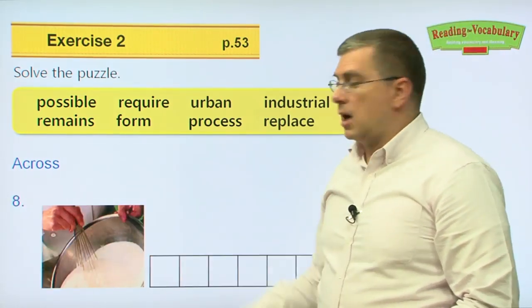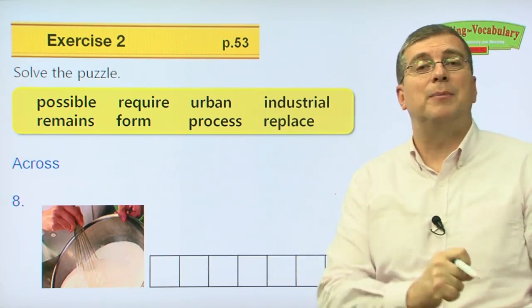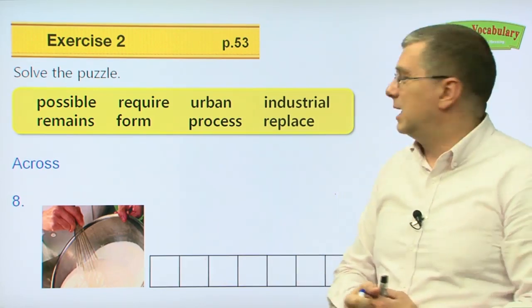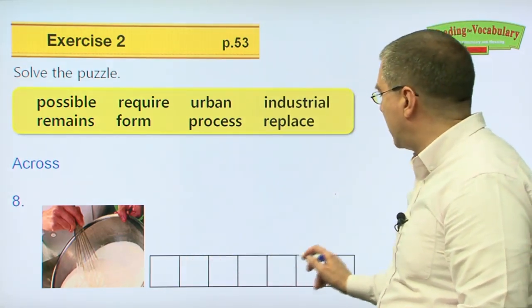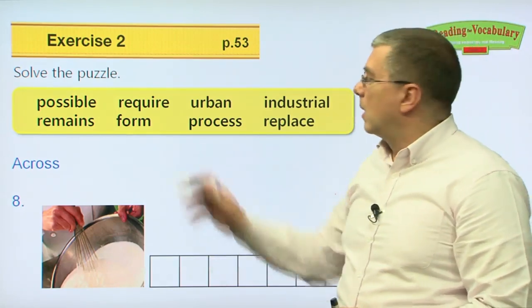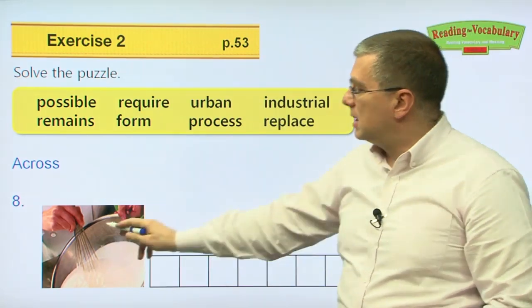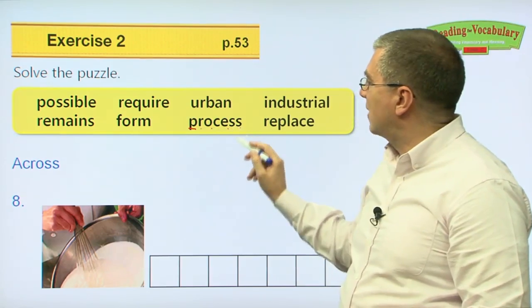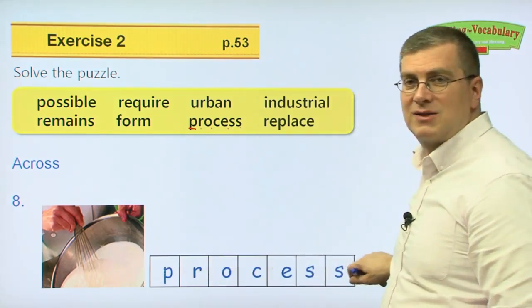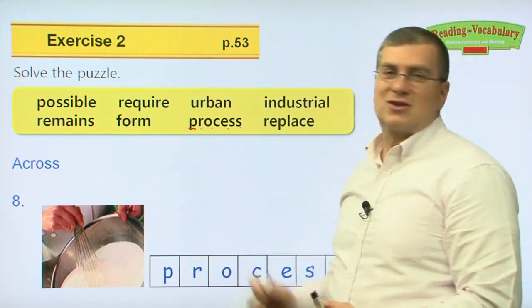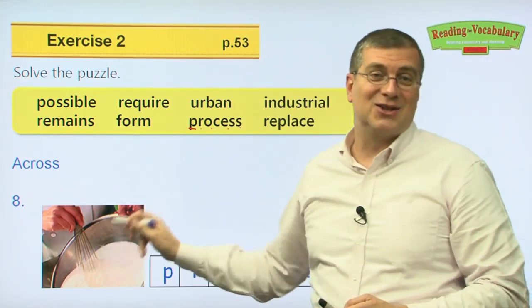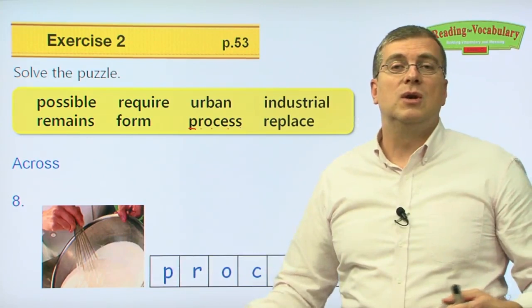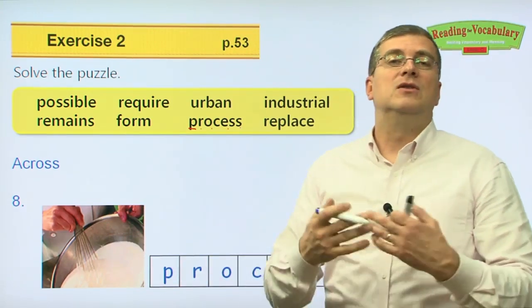Number eight across. We're following a certain series of steps to cook or make something — it doesn't have to be cooking, it can be anything. We need seven letters. Which seven-letter word has to do with this picture? P-R-O-C-E-S-S — that's our word. It is 'process.' A process is a series of steps or actions or changes to do something.